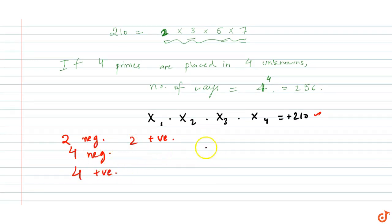These cases we need to consider in order to get a product of positive 210. If you have two negatives they will cancel out with two positives, so you'll get positive 210. Four negatives will cancel each other to get positive 210, and four positives.